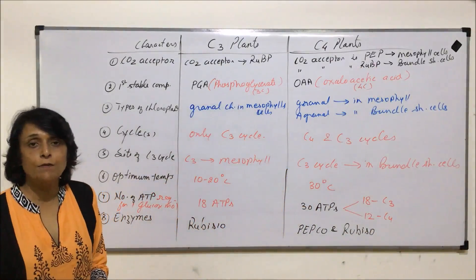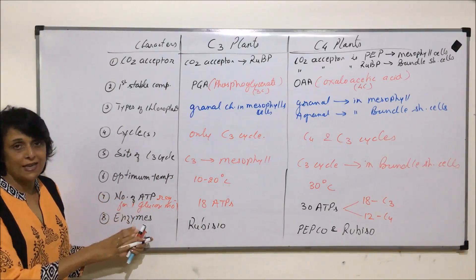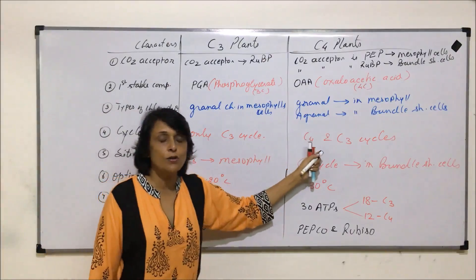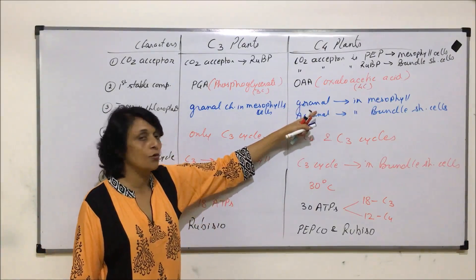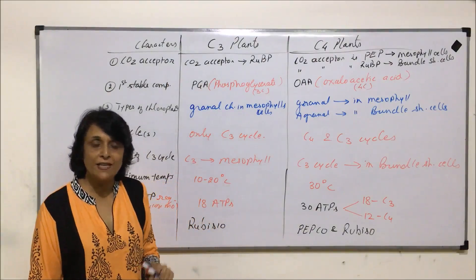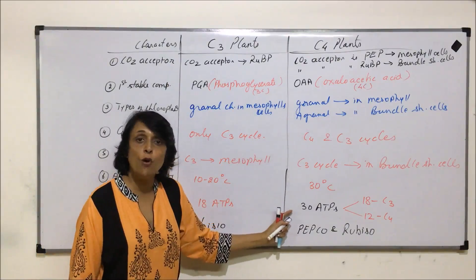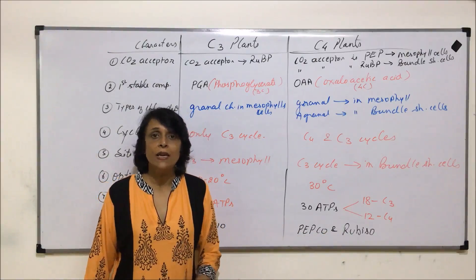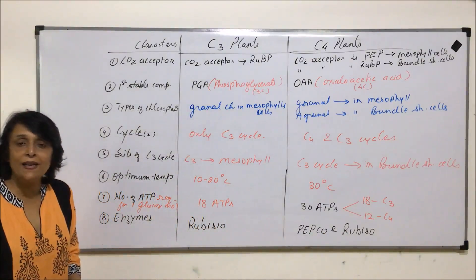One more comparison point is where oxygen is evolved. In C3 plants, oxygen is evolved in mesophyll cells. In C4 plants, oxygen is also evolved in mesophyll cells because granal chloroplasts are there and non-cyclic photophosphorylation takes place there. Because oxygen is evolved in mesophyll cells, there is no oxygen in bundle sheath cells, which is why RuBisCO there acts only as a carboxylase and not as an oxygenase.